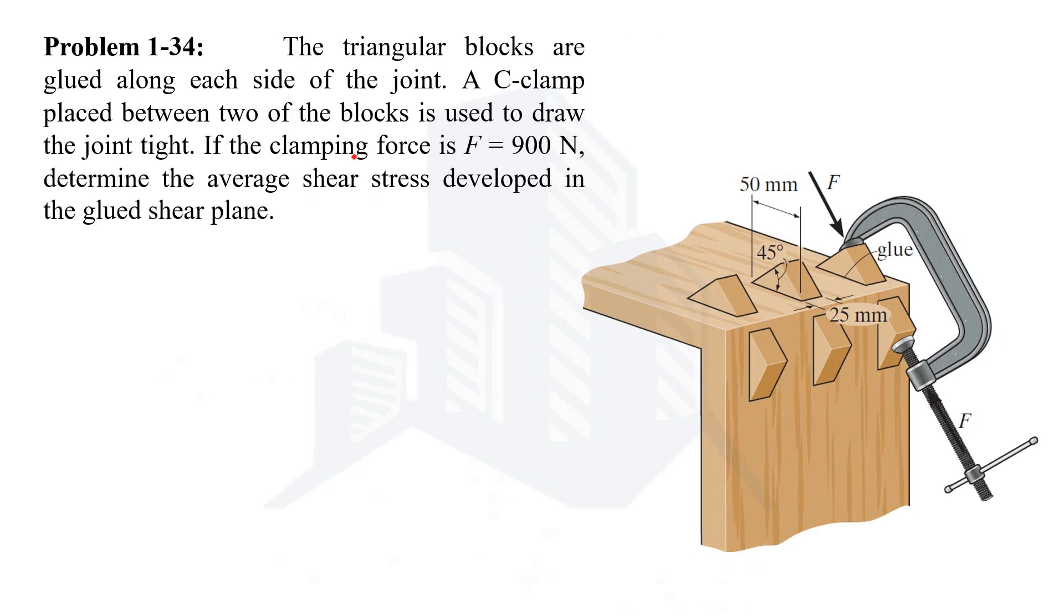Moving on to the next example, example number 1-34. So in this example instead of shear stress, we have been given the force that is being applied with the help of the C-clamp which is 900 newtons, and we are being asked to calculate the average shear stress that is being developed in the glued shear plane.